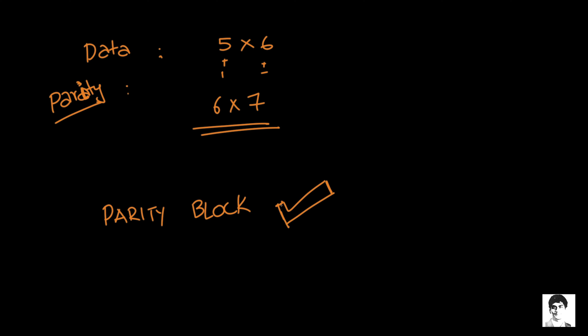So by now we know the construction of a parity block. But why? Why do we use it and how does it work?